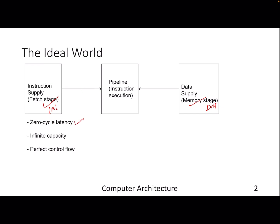Ideally, we need almost zero latency while accessing our code or data, and the memory should have infinite capacity so that our binaries and the dataset fit in. For instruction memory, control flow prediction should be perfect, otherwise the branch predictor can degrade performance. For data memory, another crucial requirement is bandwidth, because in an out-of-order superscalar processor we may need multiple responses from memory for multiple loads in the memory stage. So we need infinite capacity, zero cycle latency, and high bandwidth.